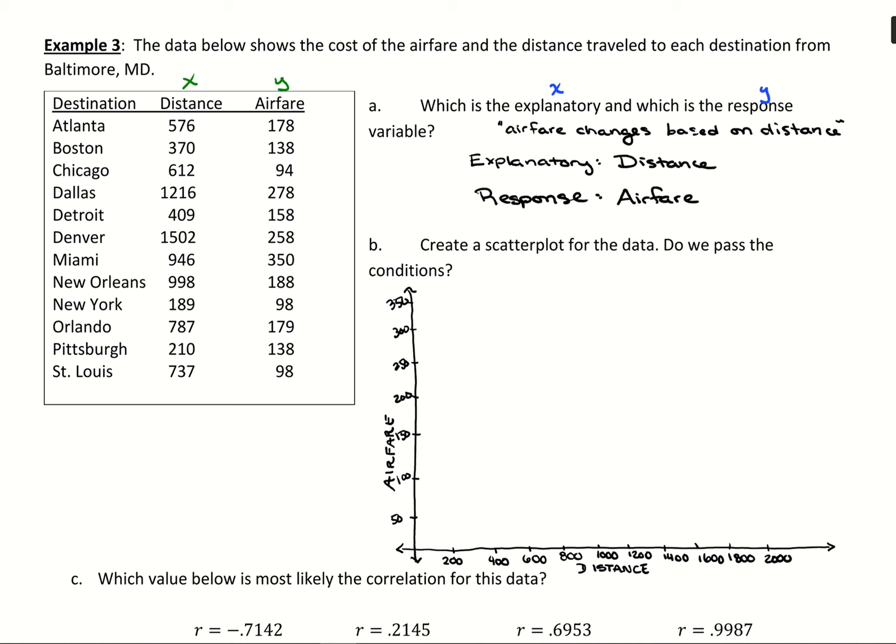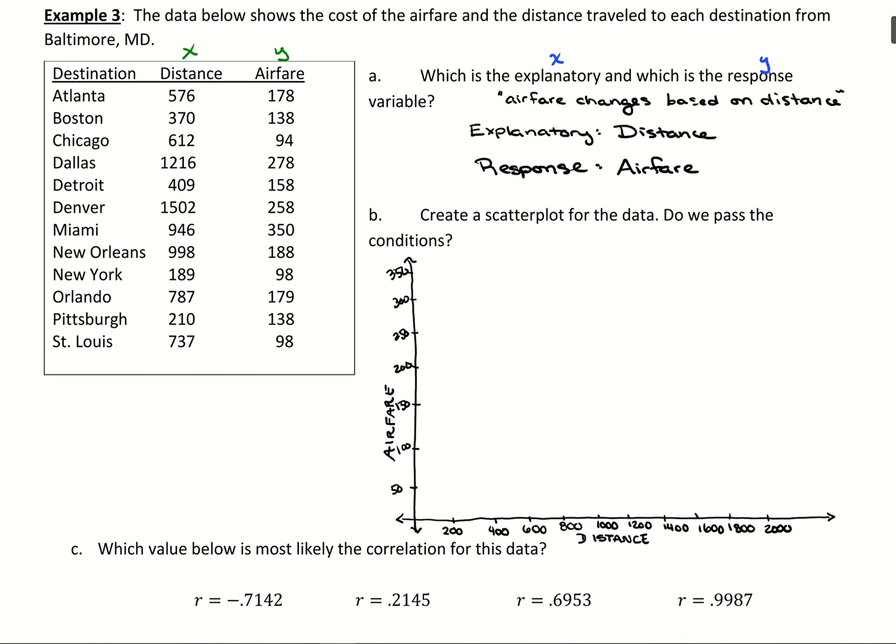When you find those, you can start getting your graph going for making your scatter plot. I have distance along the x-axis and airfare along the y-axis. We can start plotting points like Atlanta at 576, 178, Boston at 370, 138, and then the rest of these points. I'm going to pause and fill out the rest of this graph.